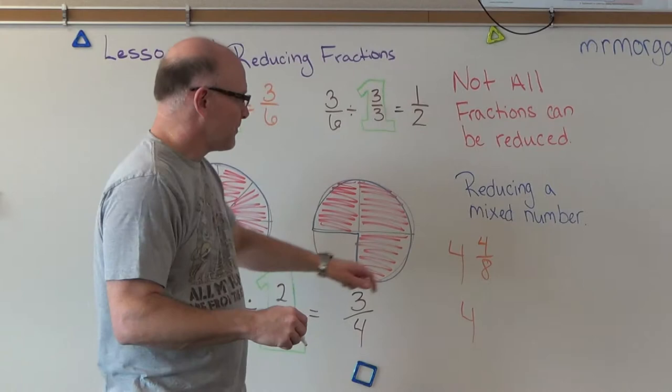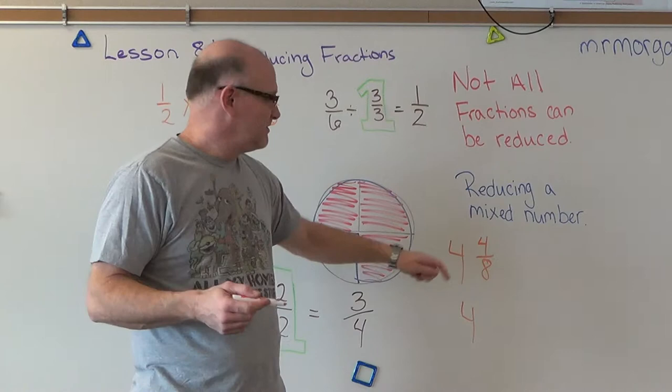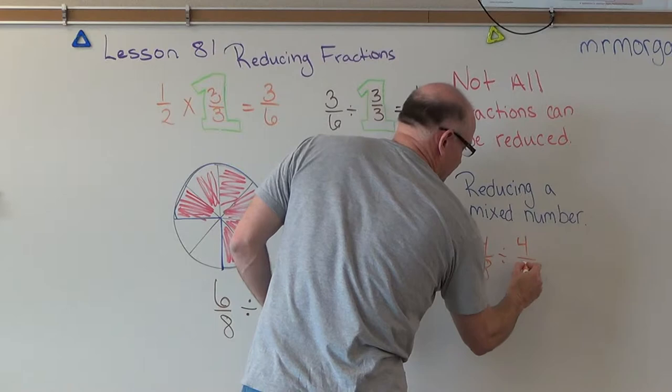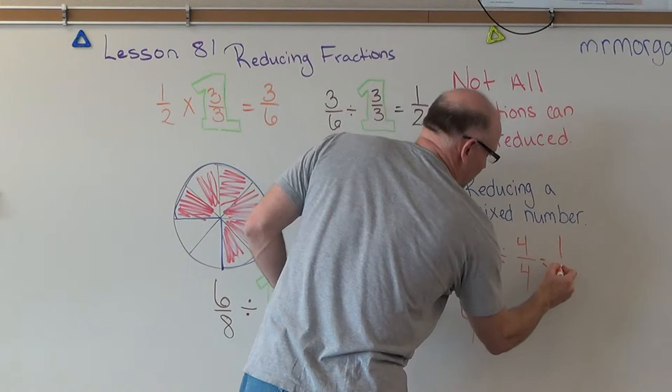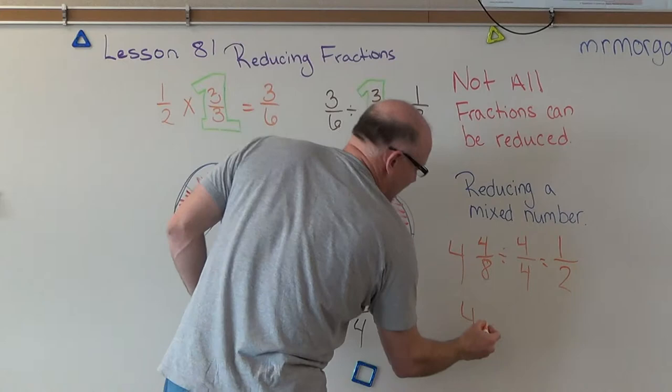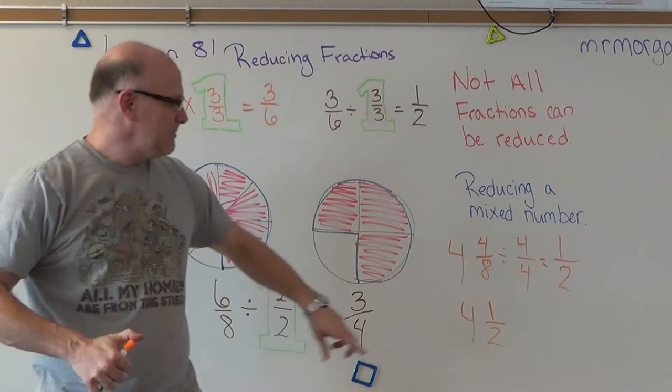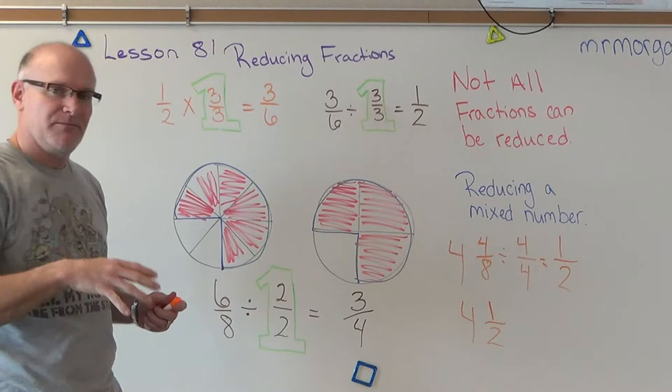To reduce this you're only reducing the fraction - the 4 is going to stay the same. We're still going to keep our 4. Then 4 and 8, we can divide by 2 or by 4 because 4 goes into both. Let's do 4. Numerator denominator same thing: 4 divided by 4 equals 1, 8 divided by 4 equals 2. So 4 and 4/8 reduces down to 4 and 1/2. We keep the same whole number - that doesn't change.